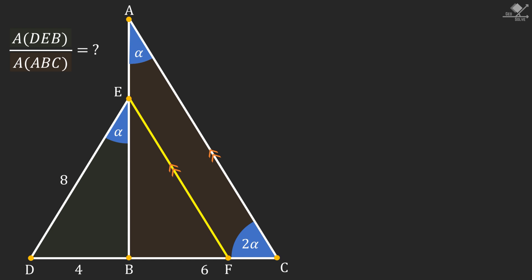Since line AC and EF are parallel, angle BEF will also be alpha degrees. With the same reasoning, angle EFB will be 2 alpha degrees.